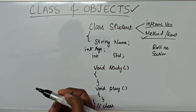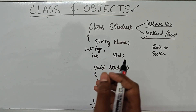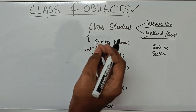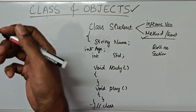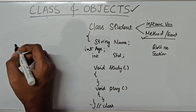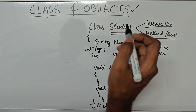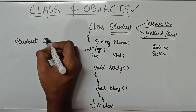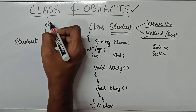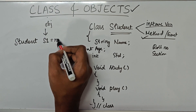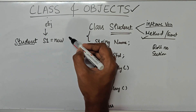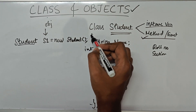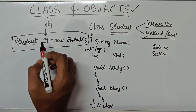So this is a class, or a blueprint, for Student. Now let's see how to create an object. We have a class Student — this is the blueprint of how a student in a school will look like. To create a student, we use the class name: 'Student', then give a name for the object — let's say s1 — equal to new Student(), with opening and closing brackets and a semicolon. This is the syntax to create an object.